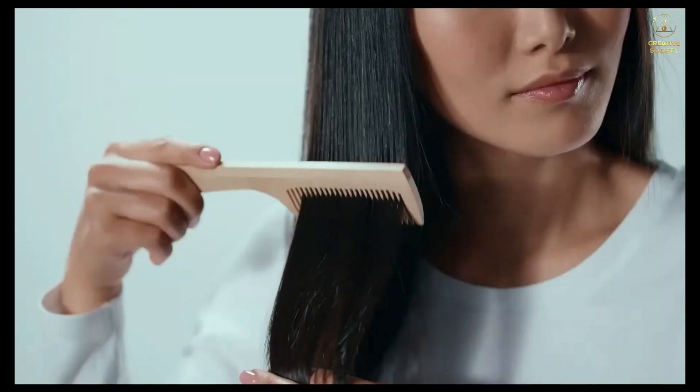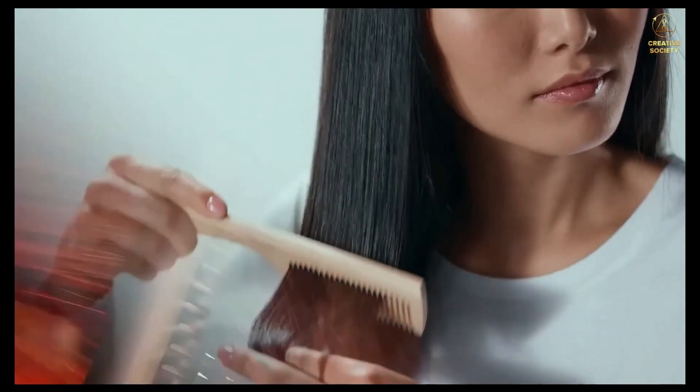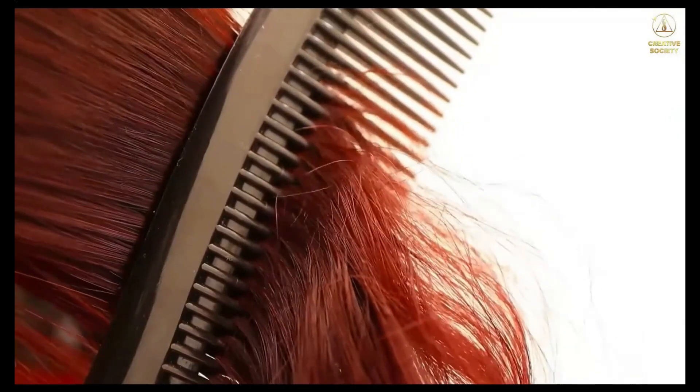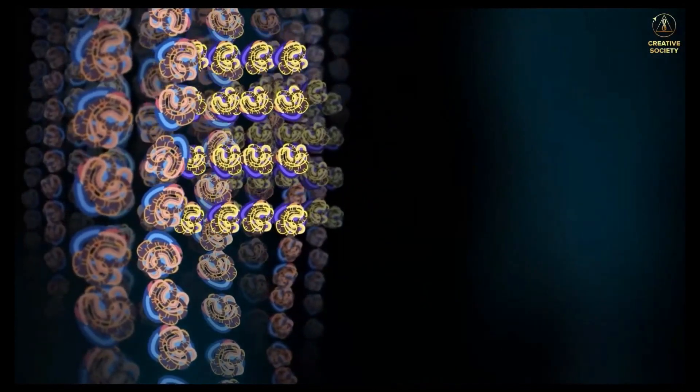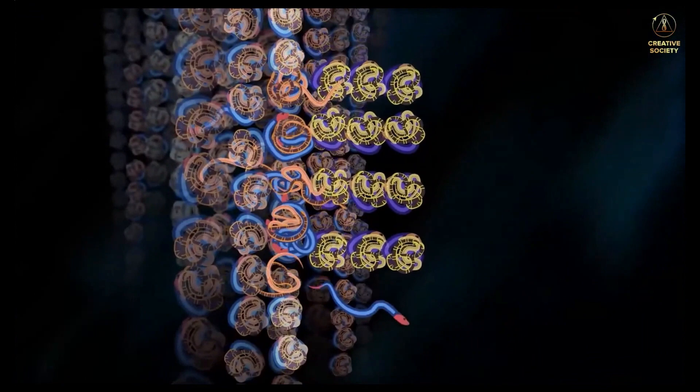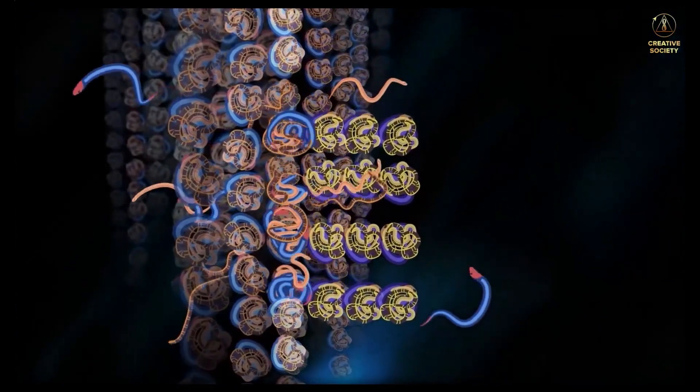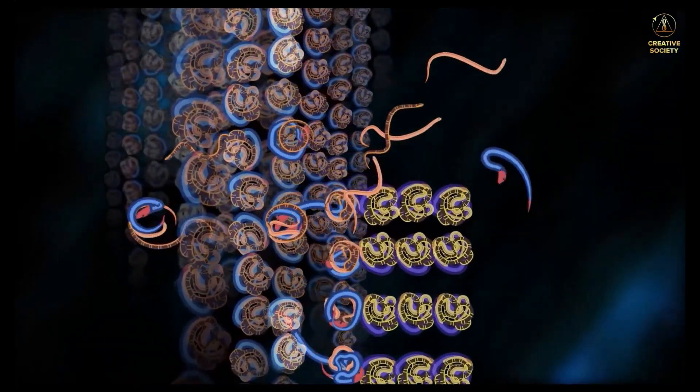For example, let's take static electricity. Each of us experiences it in everyday life when brushing our hair. Both hair and a comb are dielectrics. When we run a comb through our hair, we untangle some snake tangles and create new ones, thus releasing snakes. The snake tangles on the comb interlaced with the ones in the hair.